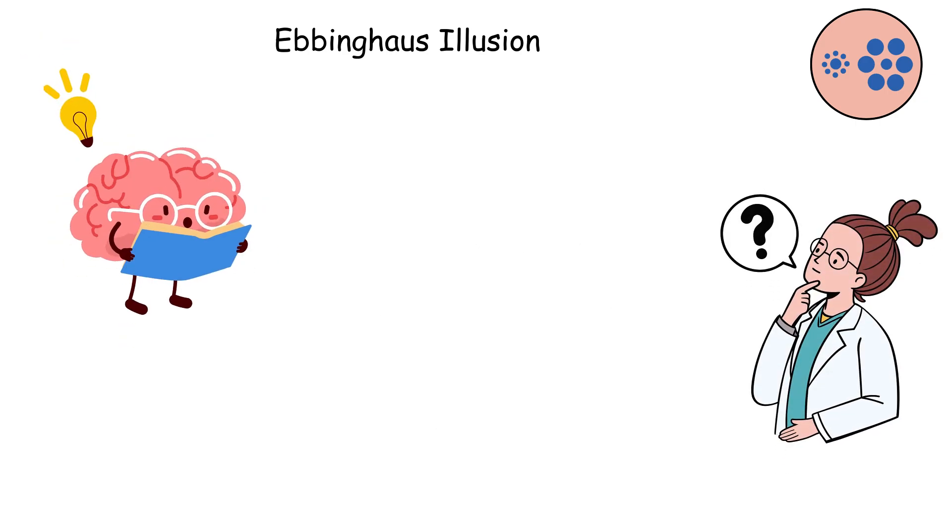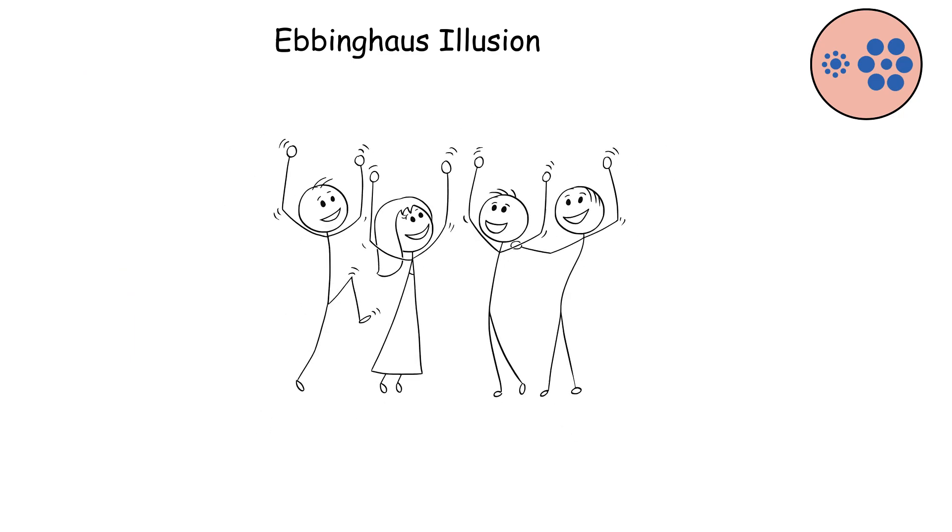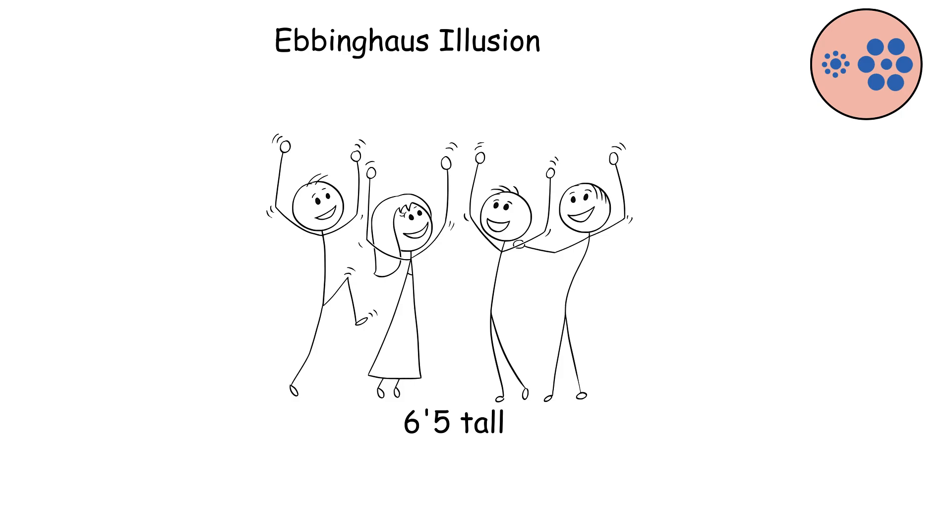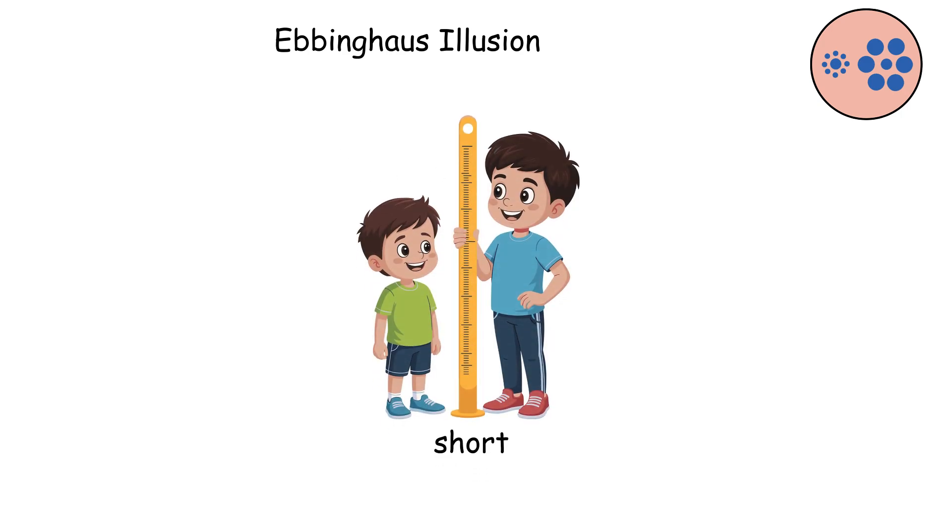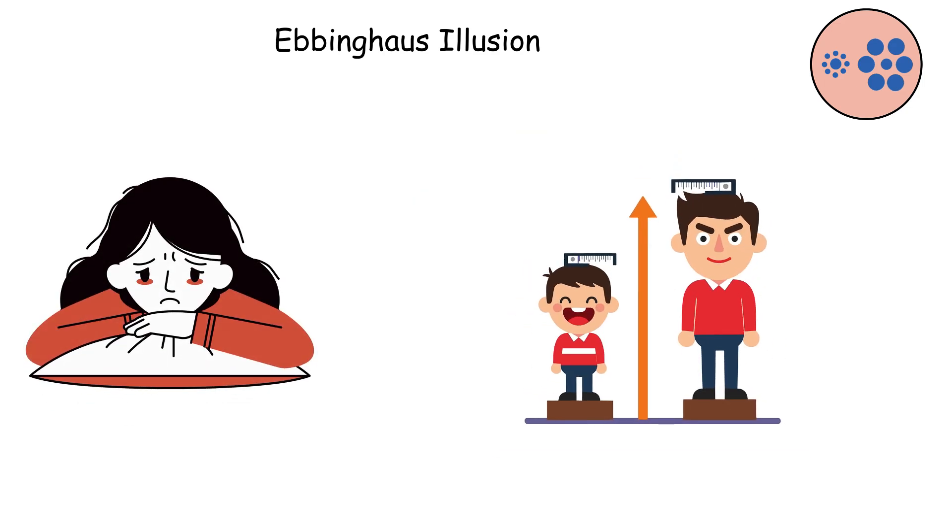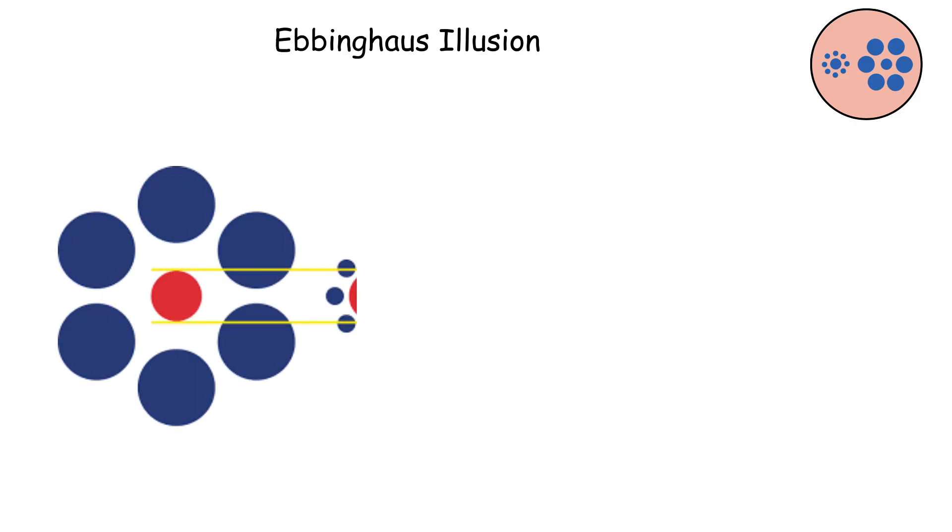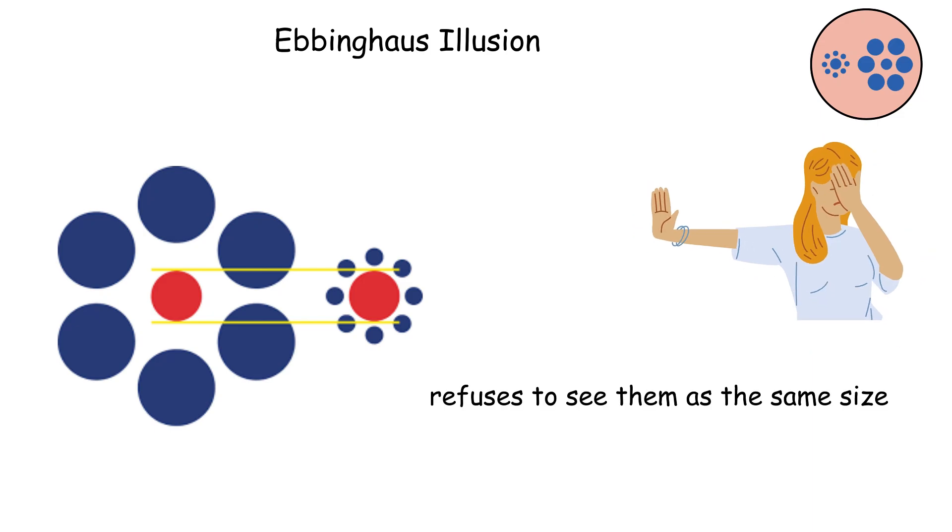The reason your eyes fall for this trick is that your brain uses context and relative size to make judgments about everything you see. It's like showing up to a party where everyone is 6 feet 5 inches tall. Suddenly, your average height feels short, even though nothing about you changed. Your brain can't help but compare, and those comparisons override what's actually in front of you. Even when you measure both circles and prove they're identical, your brain still refuses to see them as the same size.